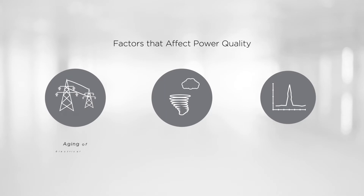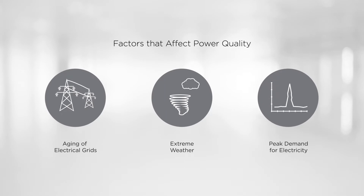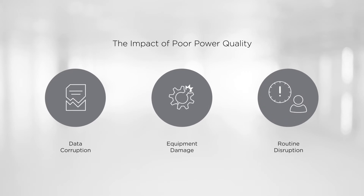However, some factors may influence power quality, including the aging of electrical grids, extreme weather, or peak demand for electricity. Poor power quality may lead to disastrous outcomes, such as data corruption, equipment damage, and even disruption to your daily routines.